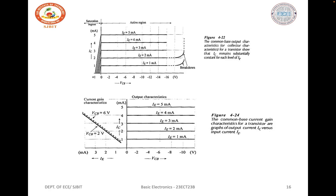If an excessive reverse-bias voltage is applied to the collector-base junction, device breakdown may occur. Breakdown can be caused by the same effects that make diodes break down, and also by the collector-base depletion region penetrating into the base until it contacts the emitter-base depletion region — a condition known as punch-through or reach-through — which allows very large currents to flow, possibly destroying the device. It is very important to maintain VCB below the maximum safe limit specified by the manufacturer. Typical maximum VCB levels range from 25 to 80 volts.